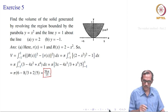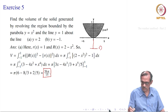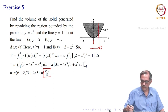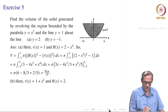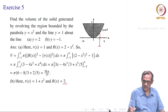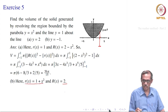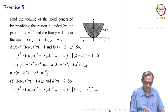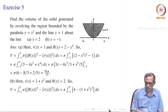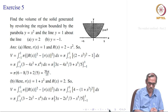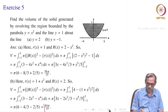Now the same region is revolved around y equal to minus 1. Measuring from y equal to minus 1, the outer radius R(x) equals 1 plus x square and the inner radius r(x) equals 2. Plugging into the formula: integral from minus 1 to 1 of π times [R(x)² − r(x)²] equals 4 minus (1 plus x²)², which simplifies to give 64π/15.